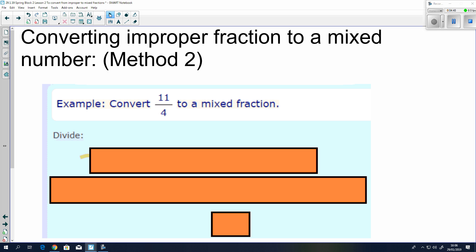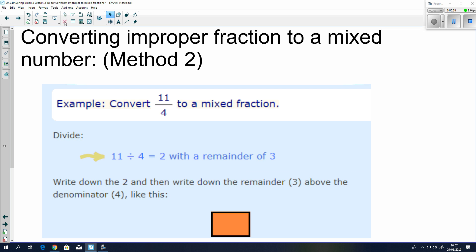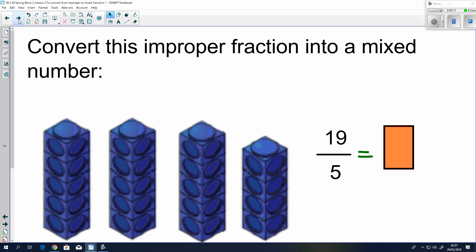Having a look here, we have 11 quarters. Another way you can convert it. If the other method worked for you, then don't bother watching this one. If you'd like to have a look at a different one though, that's fine too. So, you can think 11 divided by 4 equals 2 with a remainder of 3, which is what we've been talking about. Write down the 2, write down the remainder of 3 above the denominator of 4, like that. There you go.